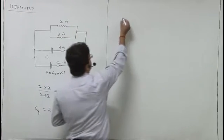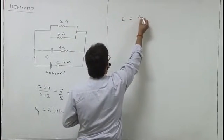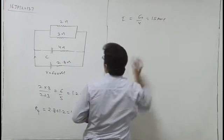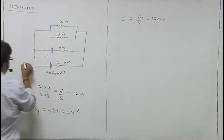Current kitna jaye ga? Total current is 60 by 4, 15 ampere. Yehaan se 15 ampere current flow karay ga.